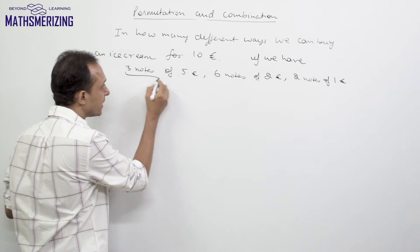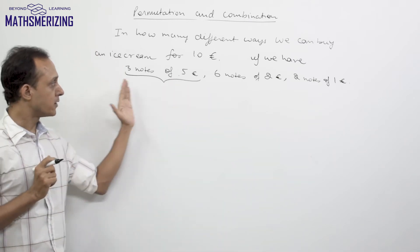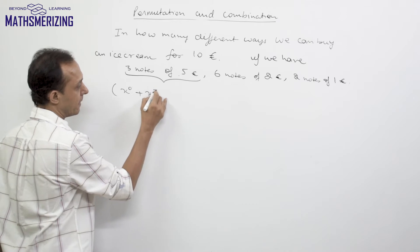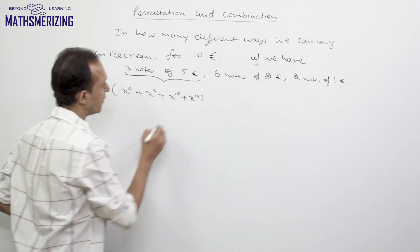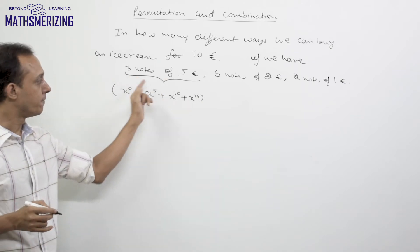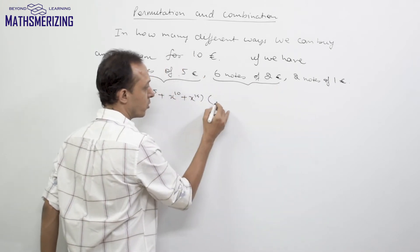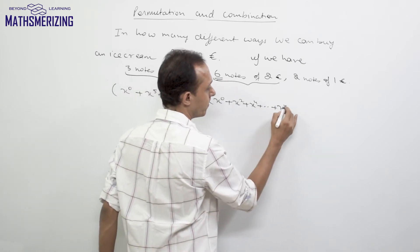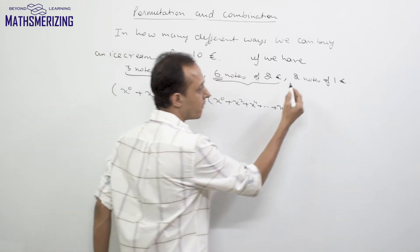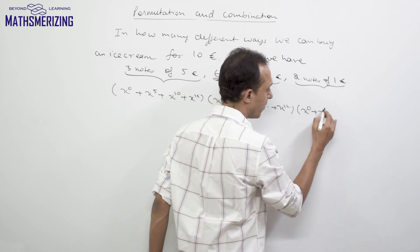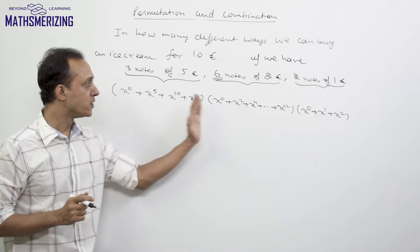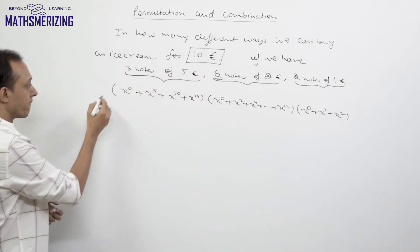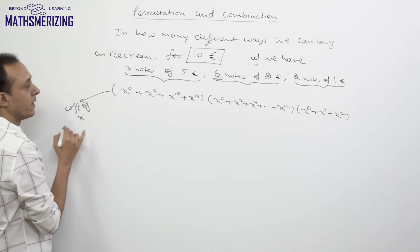Looking at the 3 notes of 5 euros, the amounts I can pay using them are: nothing (x^0), 5 euros (x^5), 10 euros (x^10), or 15 euros (x^15) if I use all 3. For the 2-euro notes I write x^0, x^2, x^4, up to x^12 if I spend all 6. For the 2 one-euro notes, I can spend 0, 1, or 2 euros. Since we need to buy for exactly 10 euros, I need to find the coefficient of x^10 in the product of these series.